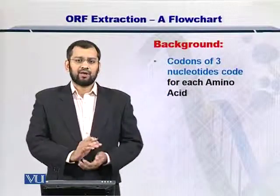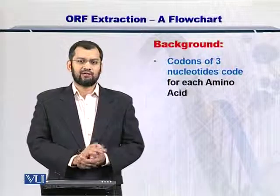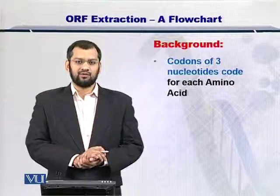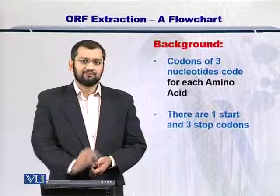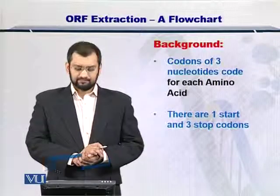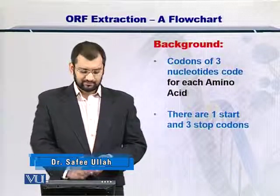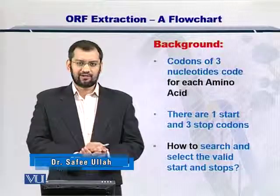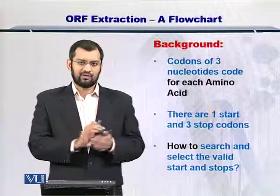The background, as you would know, is that there are three nucleotides in every codon and there are multiple codons that can code for an amino acid, and in all there are about 20 amino acids. Out of these different combinations, there is one start codon and three stop codons, and you are looking for a valid start and valid end in order to obtain the protein sequence.